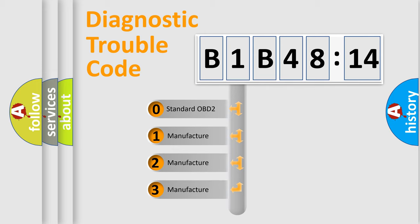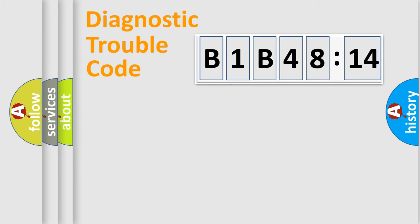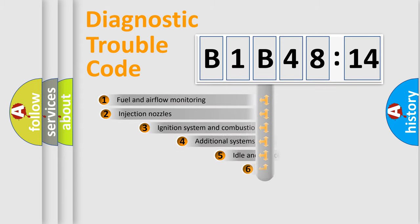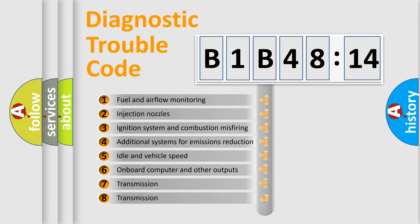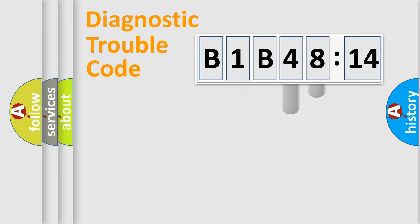If the second character is expressed as zero, it is a standardized error. In the case of numbers 1, 2, 3, it is a car-specific error. The third character specifies a subset of errors. The distribution shown is valid only for the standardized DTC code. Only the last two characters define the specific fault of the group.